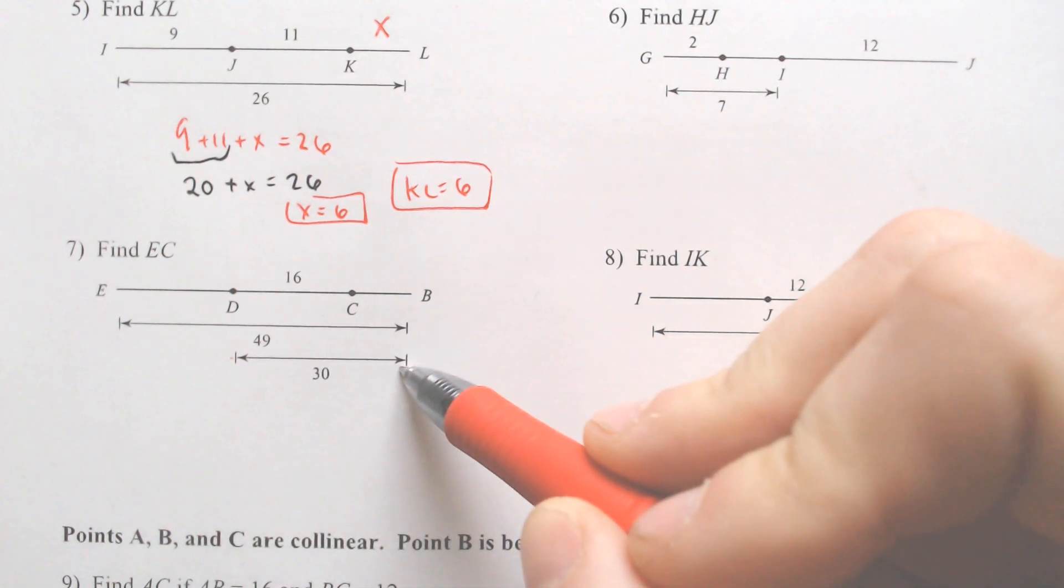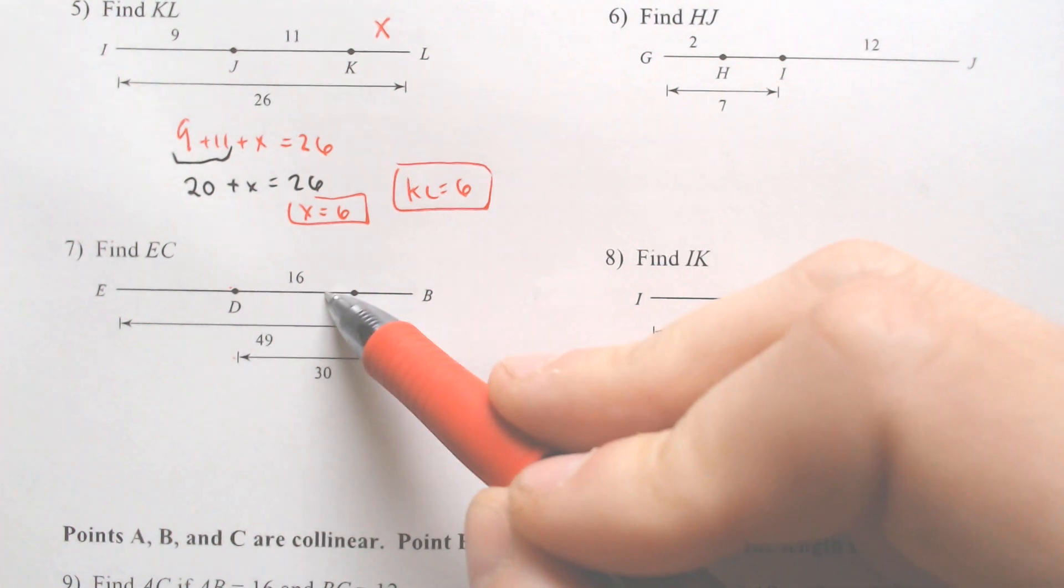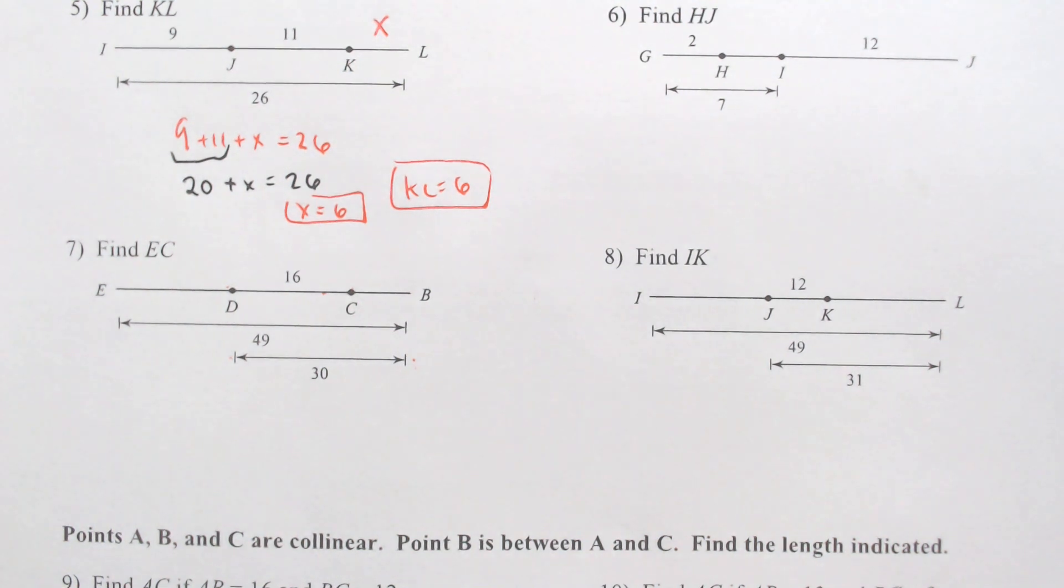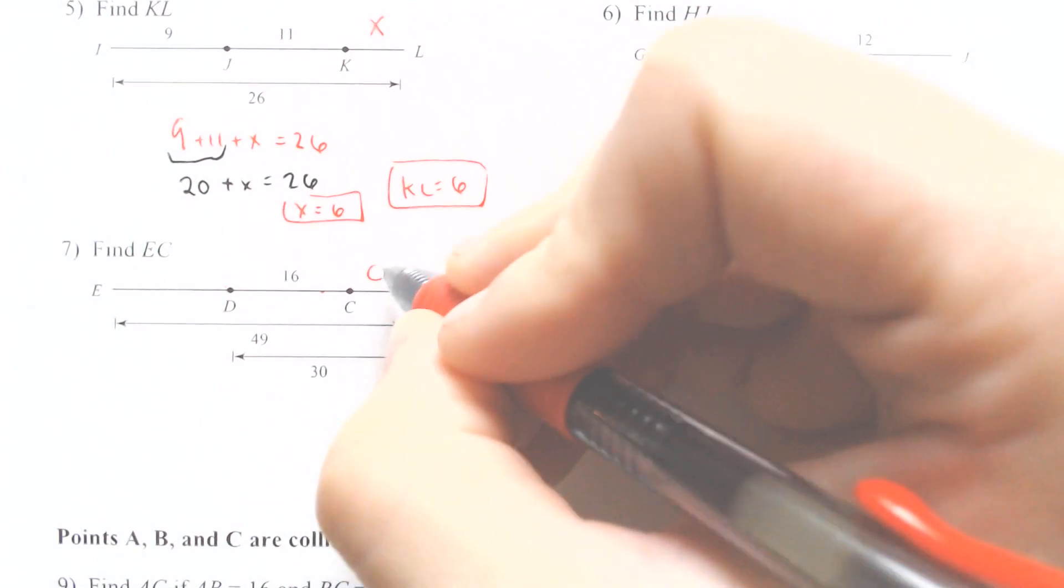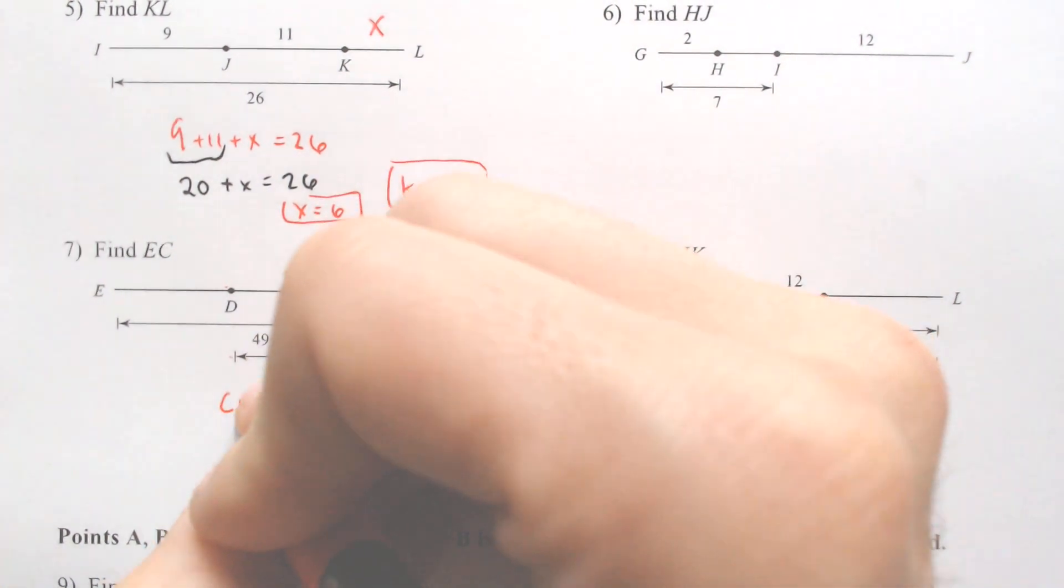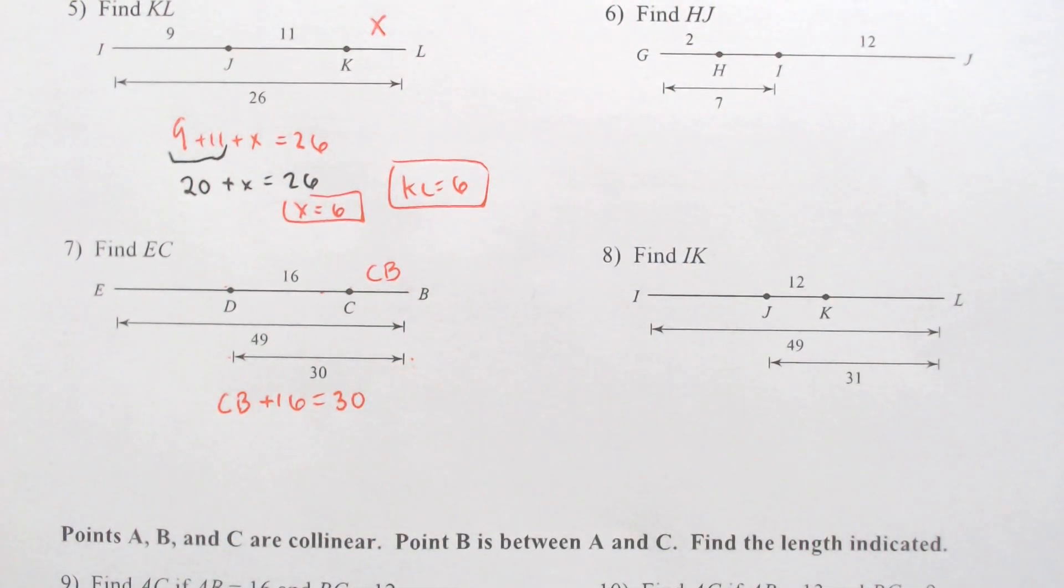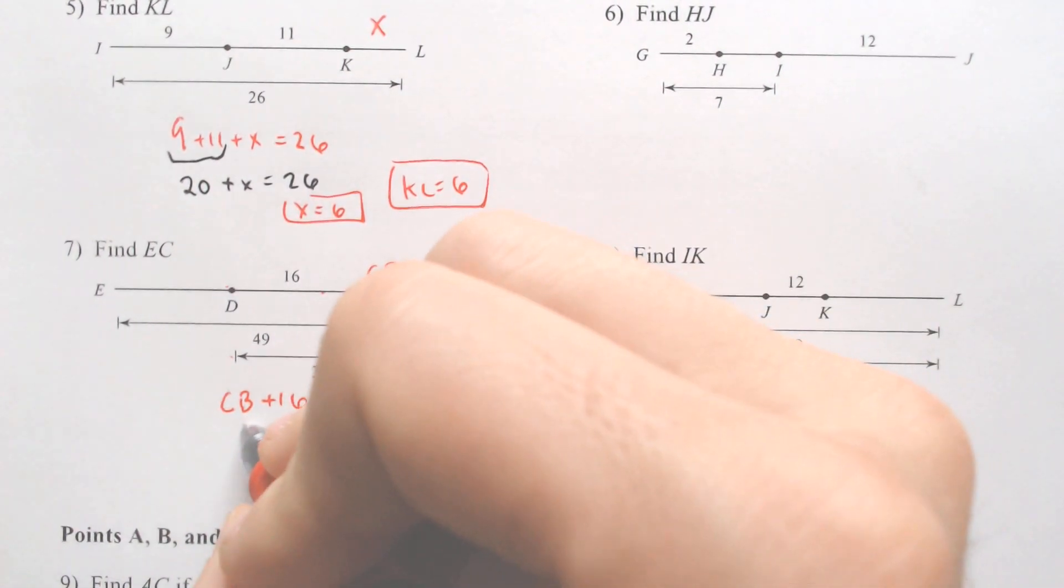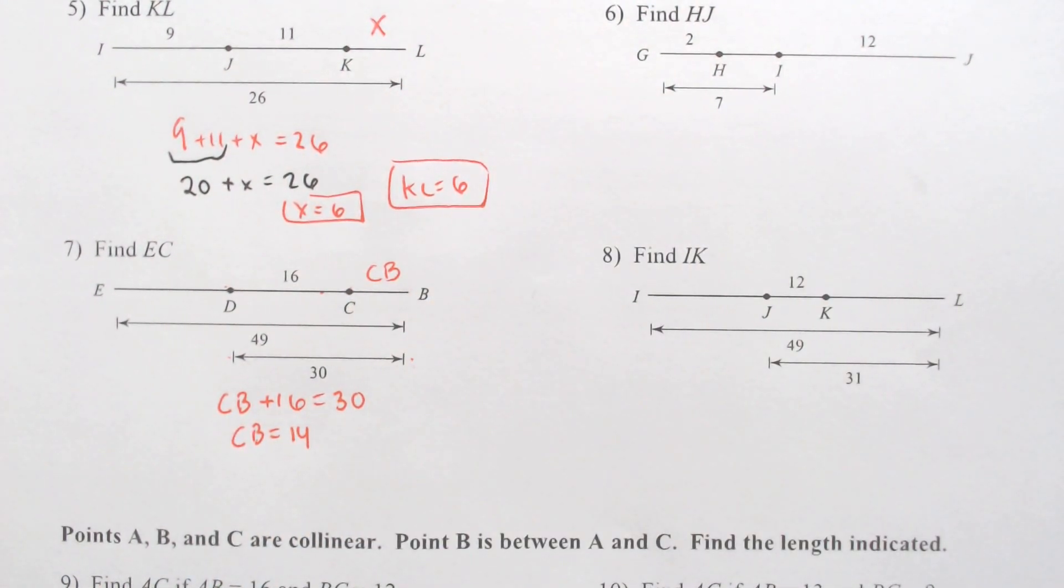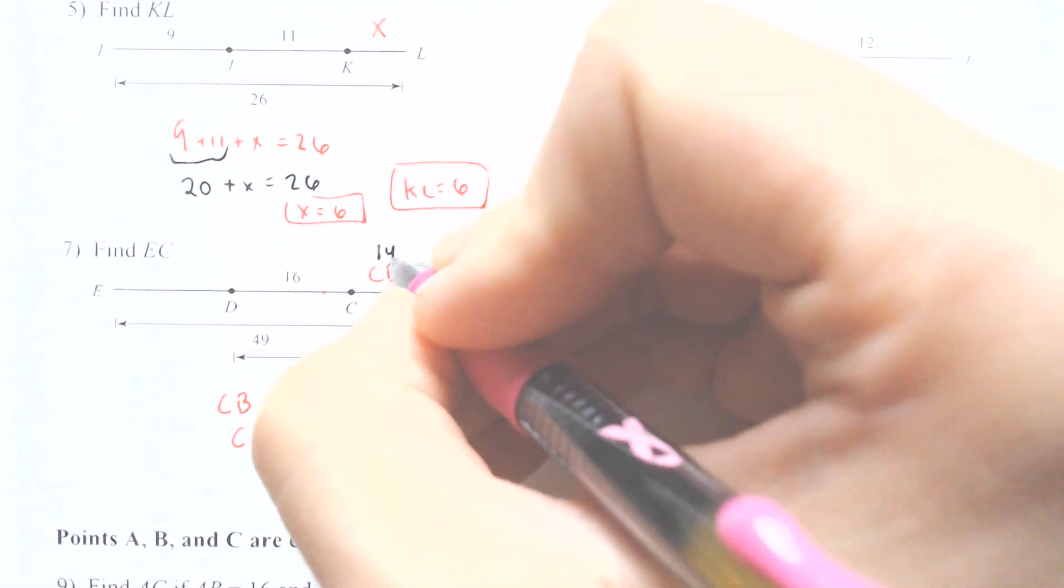I'm going to start with the 30 because if I look here, 30 equals 16 plus the C to B number. You can either call it X for C to B, but for practice I'm going to call it CB. If we add CB together with 16, it would equal 30, which means if we subtract the 16 over, if we subtract 16 from 30, you would get 14 equals the CB section.